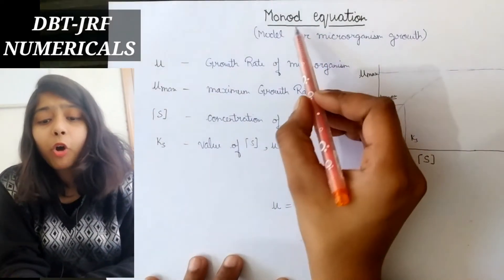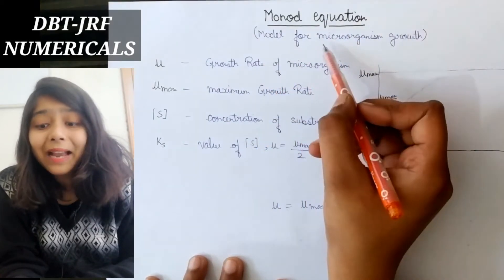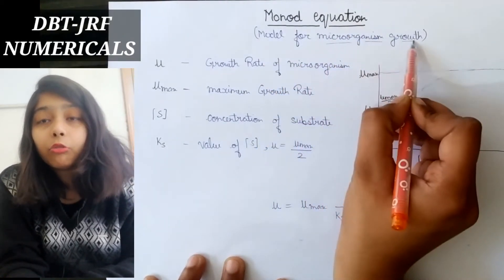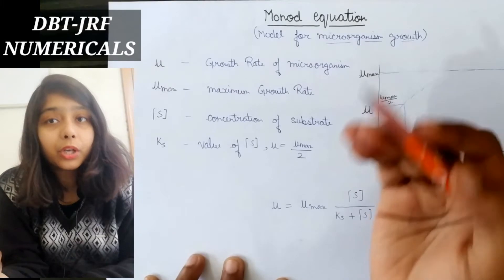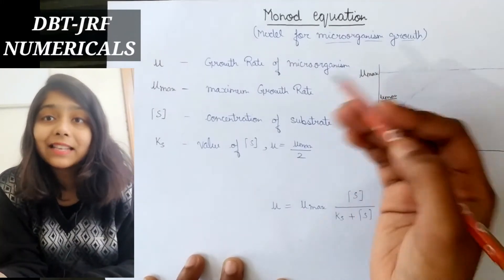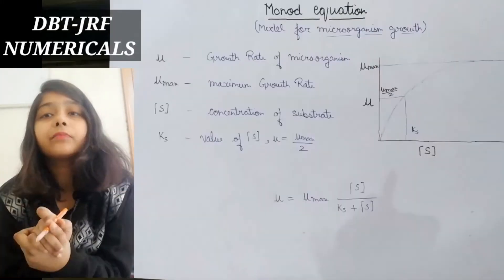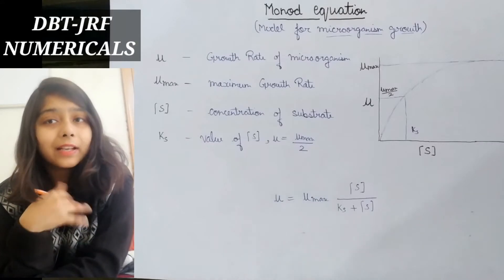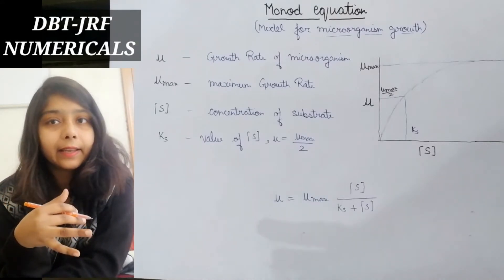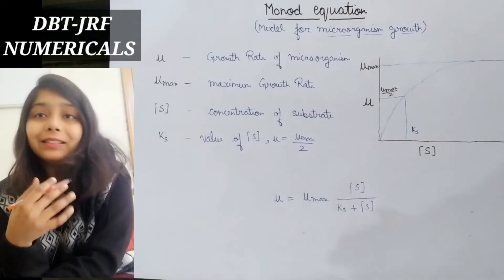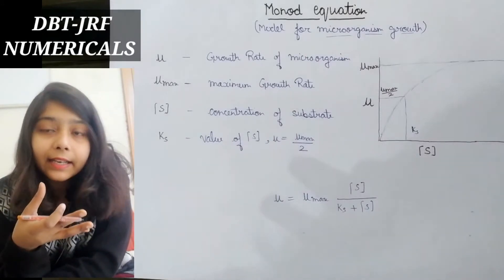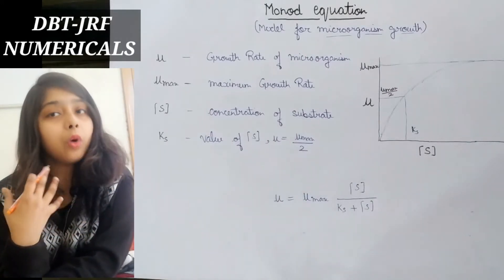Monod equation is a model that defines the growth of microorganisms. We give microorganisms substrate, and the growth of microorganisms will increase as we add substrate.